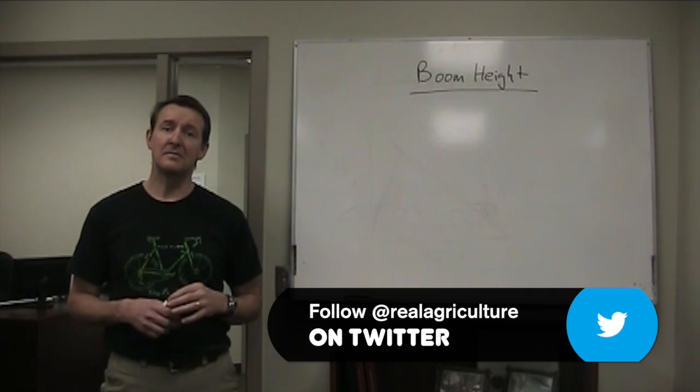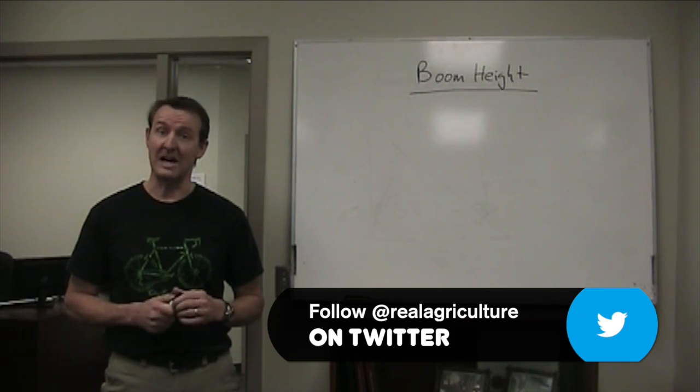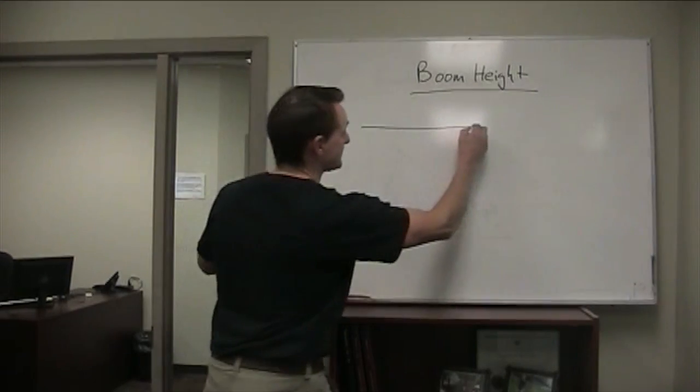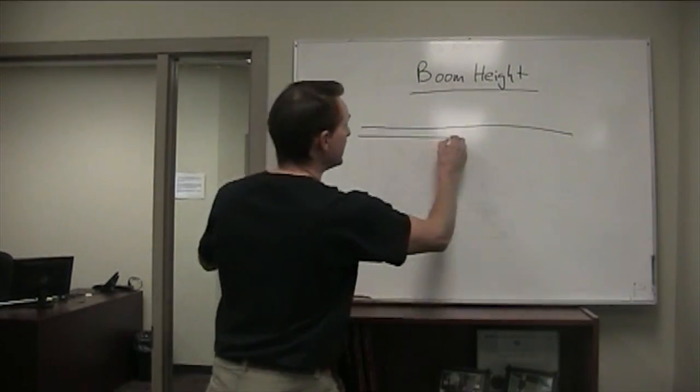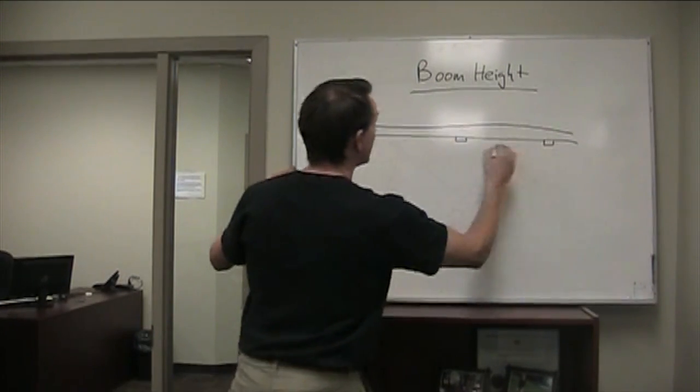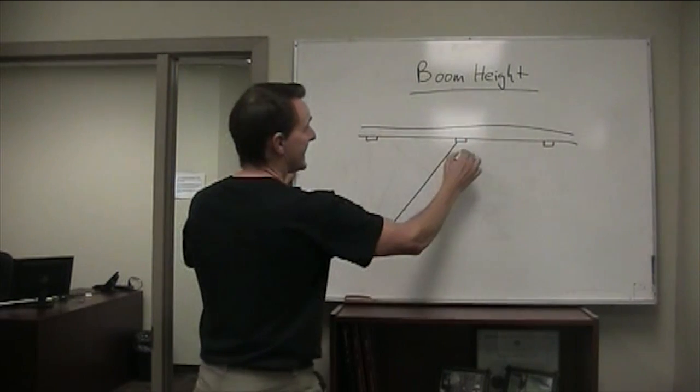I want to talk about how you set the boom height for your sprayer. First thing is that we have to understand why we have to have overlap of nozzles. I'll just draw a quick boom on here and try to explain that. We have a traditional boom and we typically have a nozzle about every 20 inches or so.